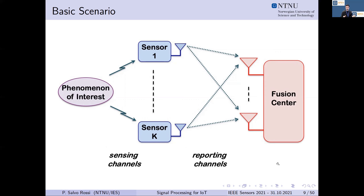There are two possible sources of errors in this system. One comes from the sensing process on the sensing channels between the phenomenon of interest and the sensors. Another source of errors is on the reporting channels, meaning when the sensors transmit information to the fusion center.